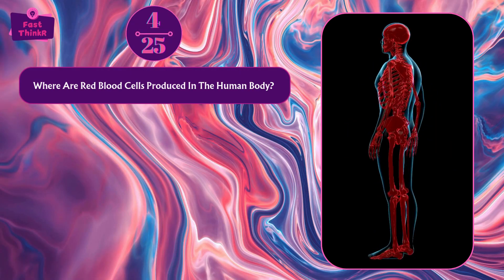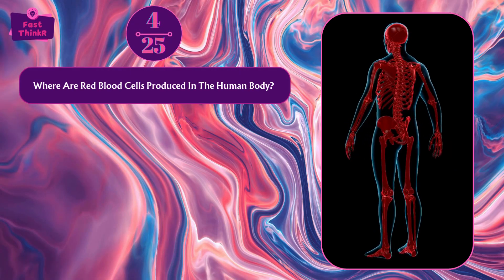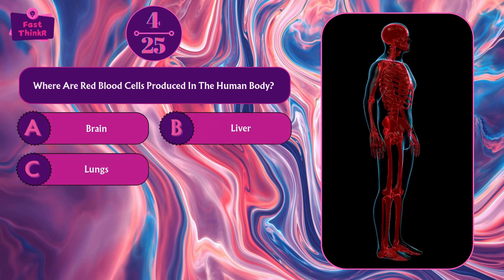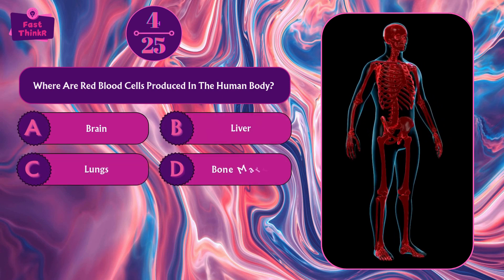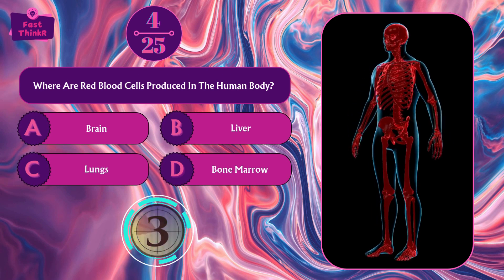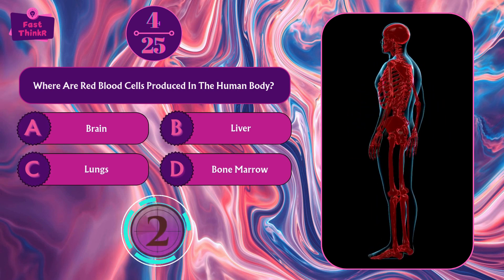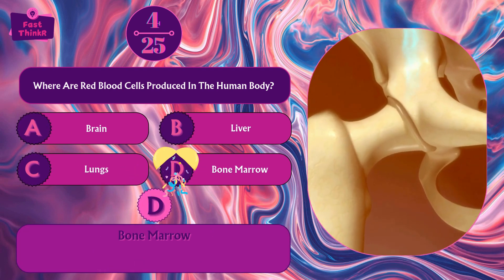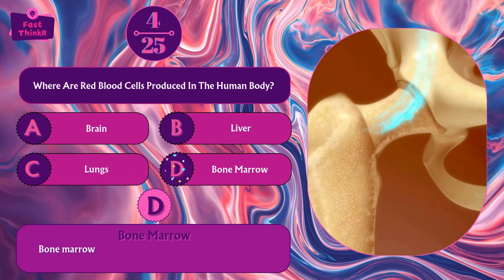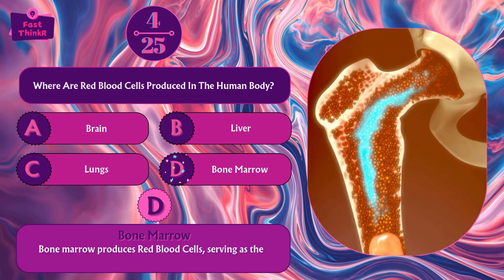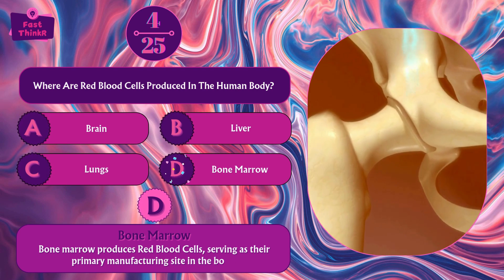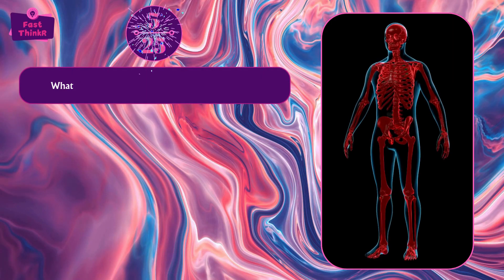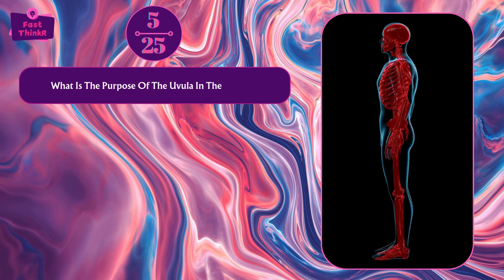Where are red blood cells produced in the human body? Brain, liver, lungs, or bone marrow? Option D — bone marrow. Bone marrow produces red blood cells, serving as their primary manufacturing site in the body.